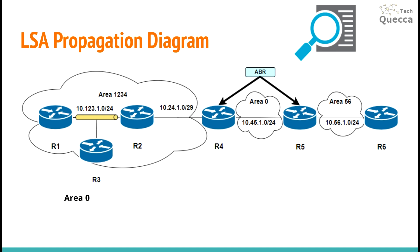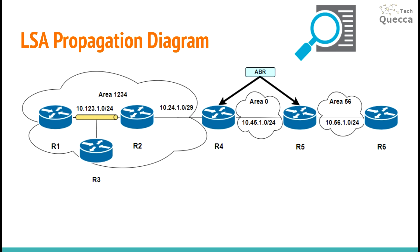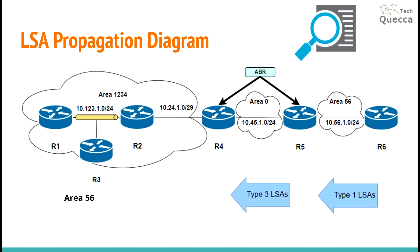For area 0, routers R4 and R5 create Type 3 LSAs based on Type 1 LSAs and forward them to area 56 and area 1234. For area 56, similar to area 1234, R6 creates a Type 1 LSA and forwards it to R5. R5 receives the Type 1 LSA, creates a Type 3 LSA, and forwards it to R4. R4 receives the Type 3 LSA from R5, creates a new Type 3 LSA, lists itself as the originating router, adds the area 0 metric, and forwards the Type 3 LSA into area 1234.